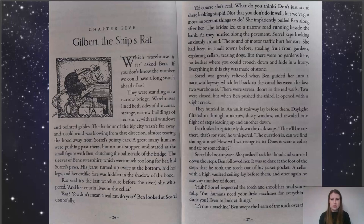There were several doors in the red walls. Two were closed, but when Ben pushed the third, it opened with a slight creak. They hurried in. An unlit stairway lay before them. Daylight filtered in through a narrow, dusty window and revealed one flight of steps leading up, and another down. Ben looked suspiciously down the dark steps. 'There'll be rats there, that's for sure,' he whispered. 'The question is, can we find the right one? How will we recognise it? Does it wear a collar or a tie or something?'